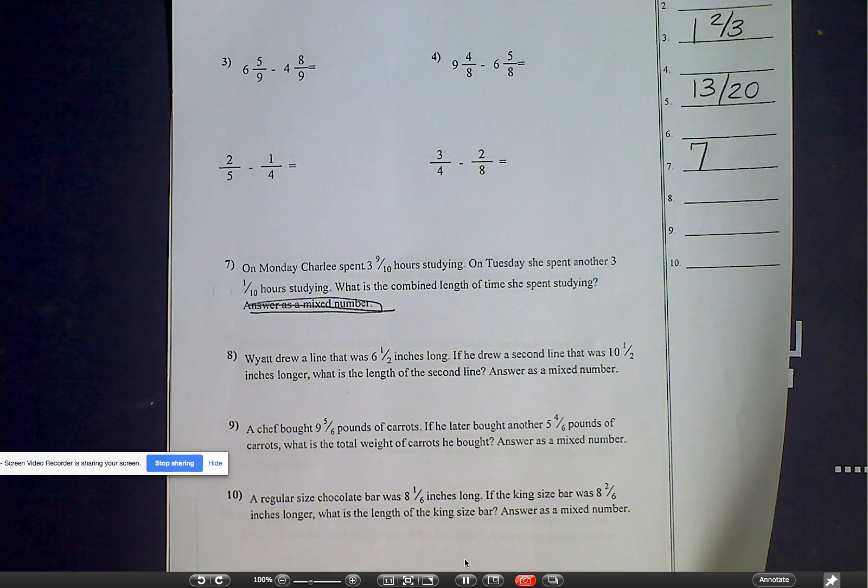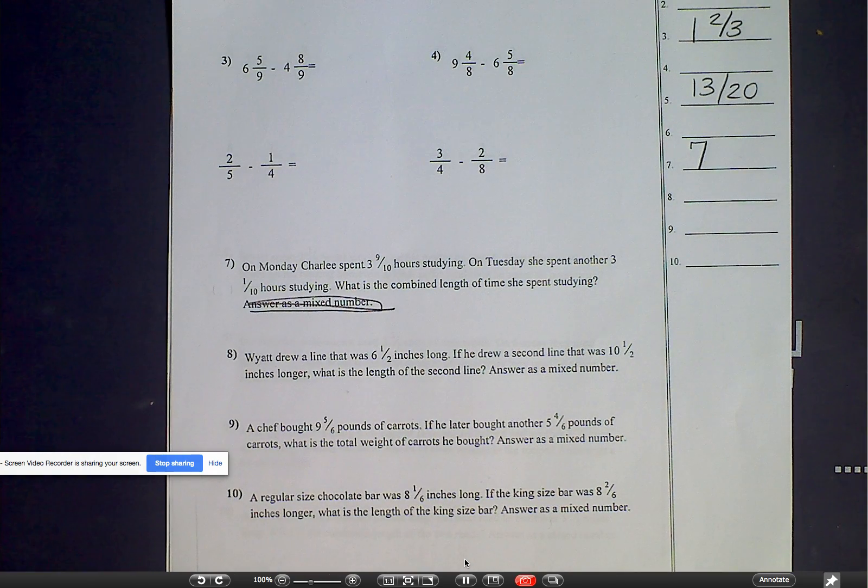Number nine. Last one. And the secret word of the day is fifth. Today's February 5th. The word is fifth. Not five and then the T-H. Actually spelled out fifth. All right. Number nine. A chef bought nine and five-sixths pounds of carrots. If he later bought another five and four-sixths pounds of carrots, what is the total weight of carrots he bought? Remember, it says answer as a mixed number, but unless it is a mixed number, I don't want you to answer as a mixed number.